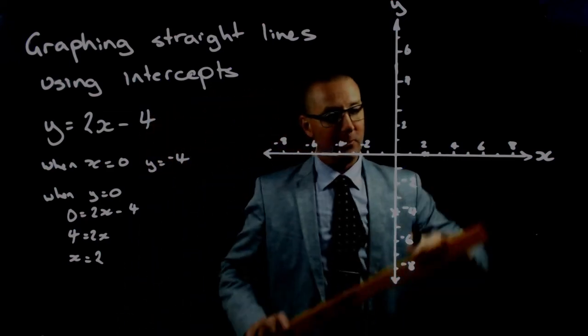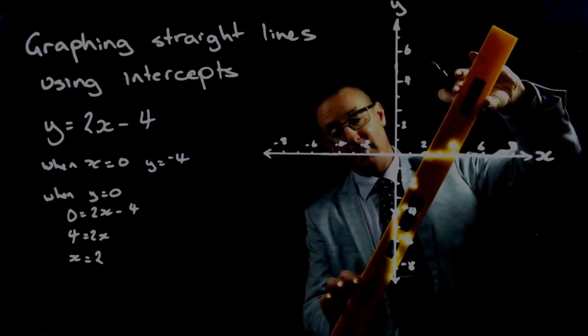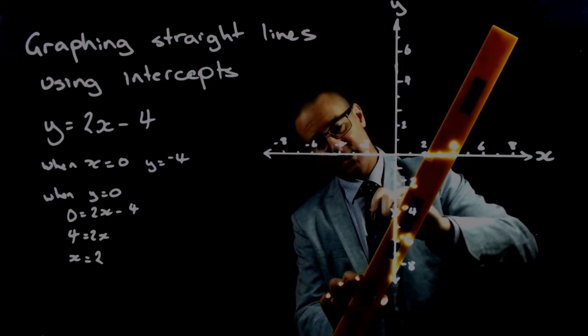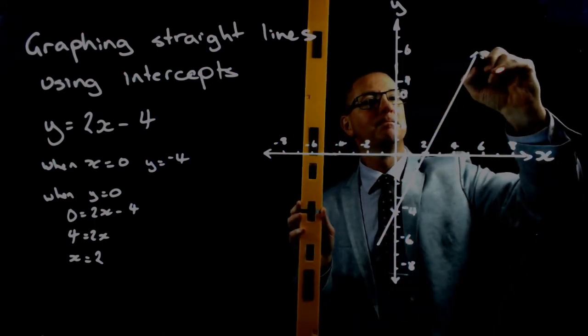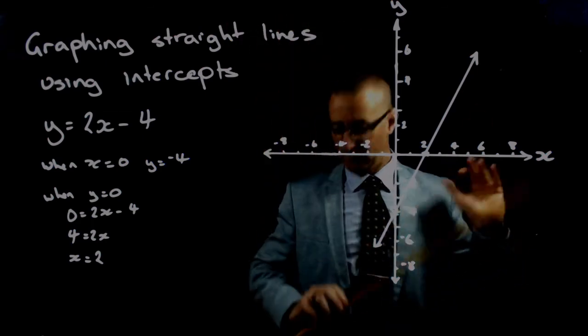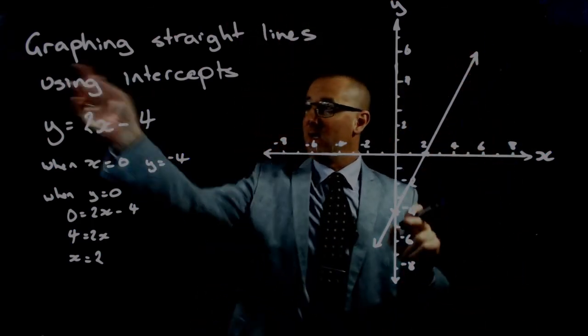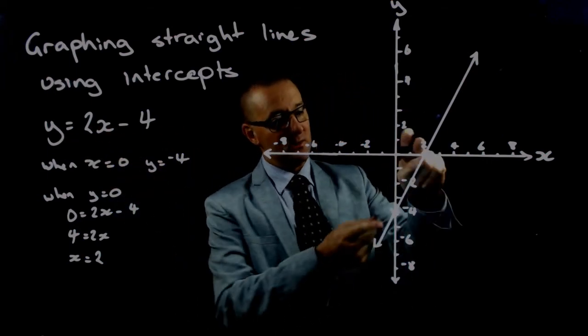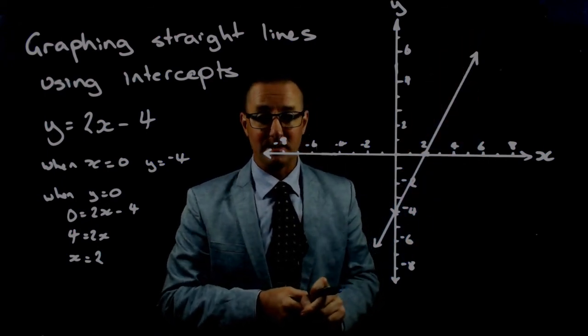We can then grab our ruler and simply join those two points with a line. Remember that the line will extend through and pass those two points. There's our line heading off forever in both directions. We've now got our straight line for y equals 2x minus 4 by using just two points, our x-intercept and our y-intercept.